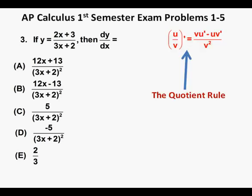This problem is written as a quotient of two functions and for that we'll use the quotient rule. The derivative of u over v equals v times u prime minus u times v prime all over v squared.